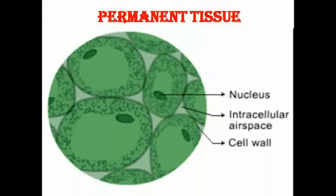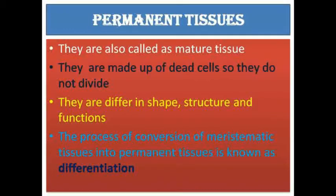Permanent tissues are also called matured tissues. These tissues come from meristematic tissue and develop into matured tissues. They are made up of dead cells, so they have lost the power of division. Permanent tissues have a definite shape, size, and function, and may be dead or living. These tissues developed from meristematic tissues.